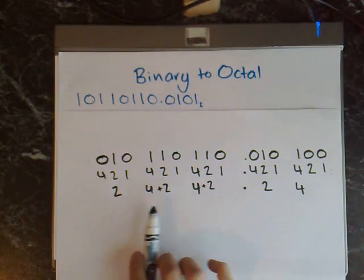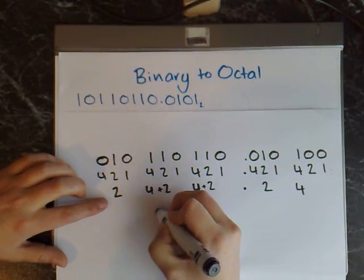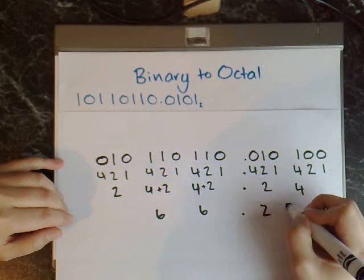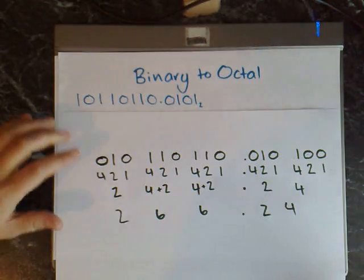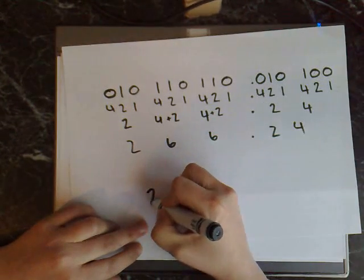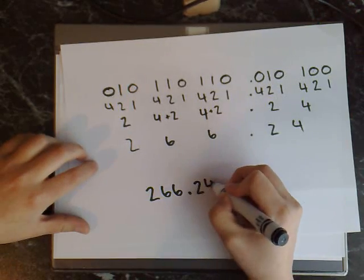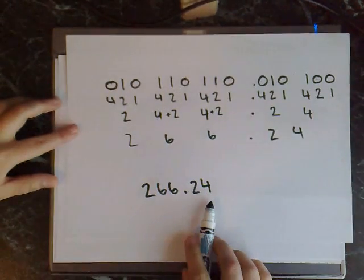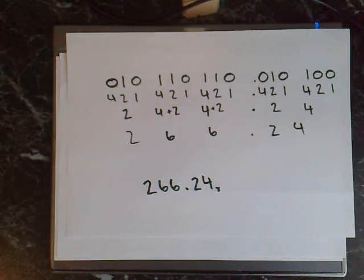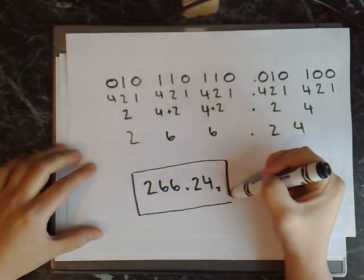Now we just need to sum up each group of digits. So 4 plus 2 gives 6, and 4 plus 2 gives 6. We'll just bring down the remaining numbers: 2, 4, and 2. So we've got 2, 6, 6, 0.24. Now just to show that this is in octal form, you write a subscript 8 at the bottom, because octal's base 8. This is the final answer: 266.24₈.